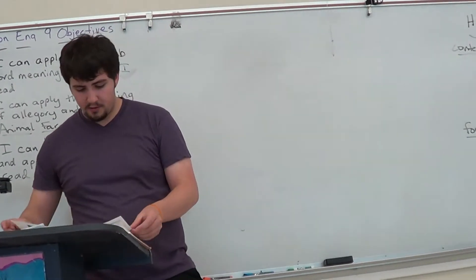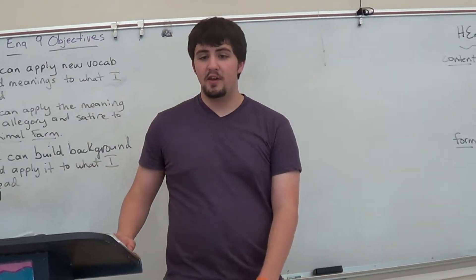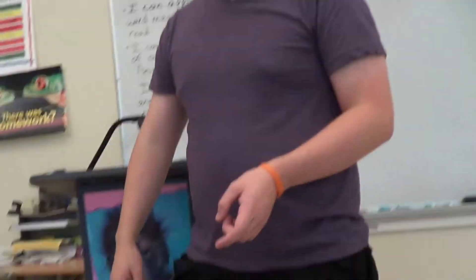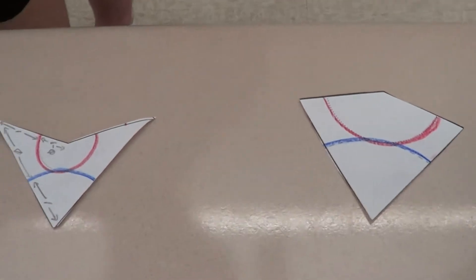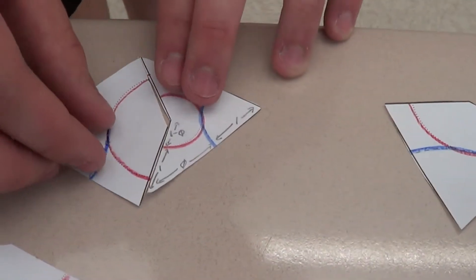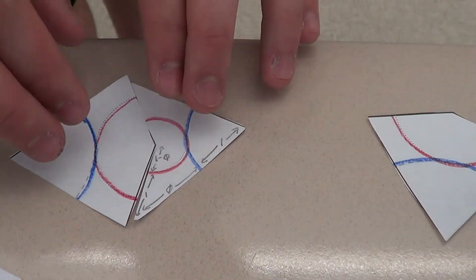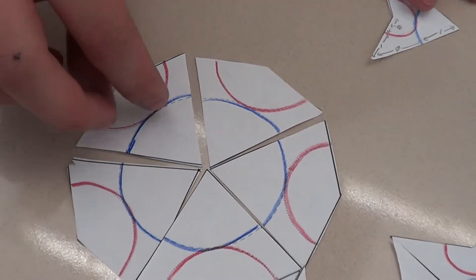But this guy Penrose, Sir Roger Penrose, came up with this shape, these two shapes, a kite and a dart, that fit together this way and can form these patterns that are non-periodic.